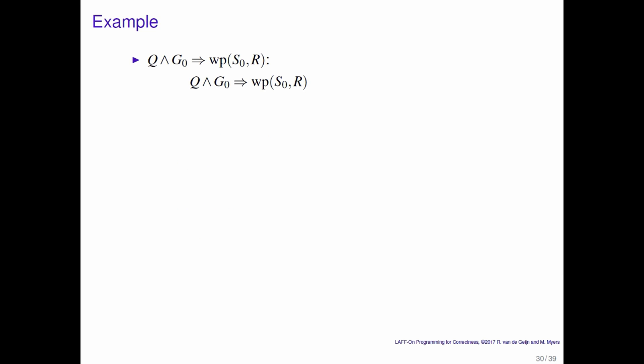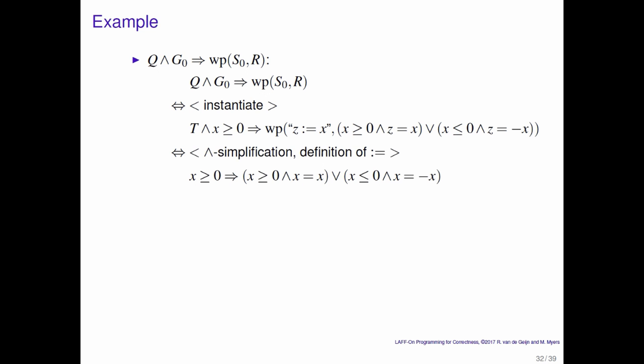Now we look at Q and G0 having to imply the weakest precondition S0, R. So we instantiate. Then we know how to compute the weakest precondition of simple assignment. That's a matter of inserting X for every occurrence of Z. And you get this.